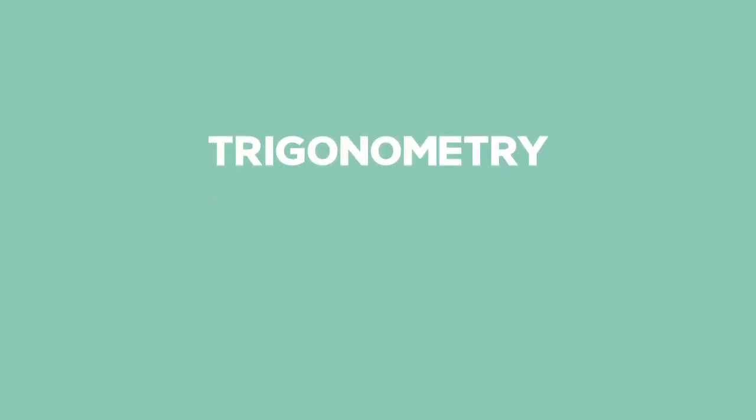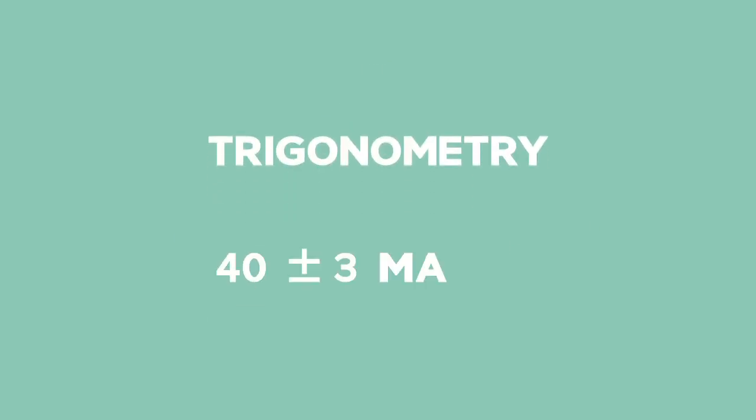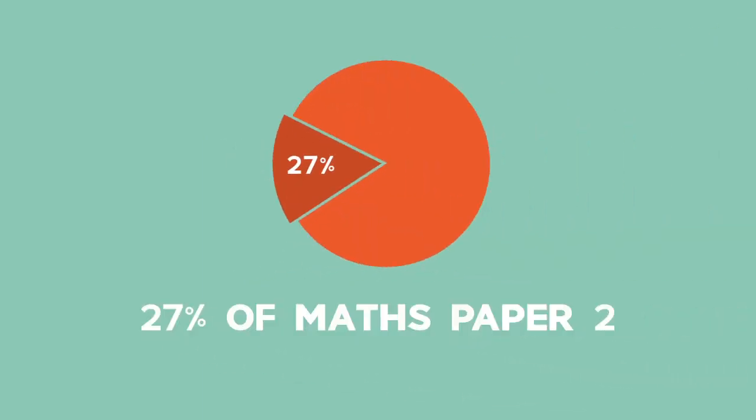Trigonometry is roughly 40 ± 3 marks in the final exam, which is approximately 27% of Maths Paper 2.